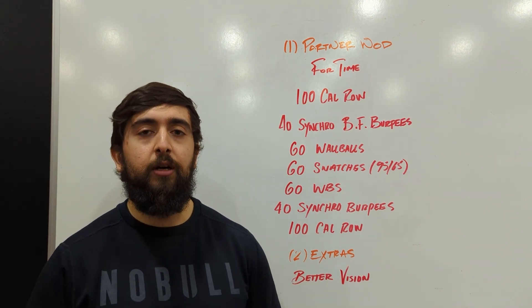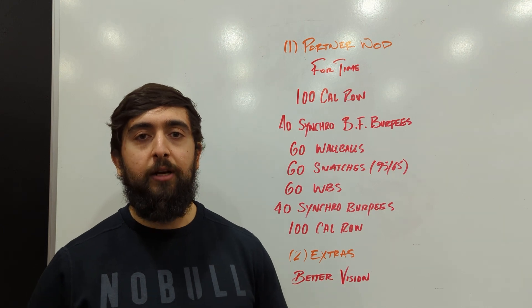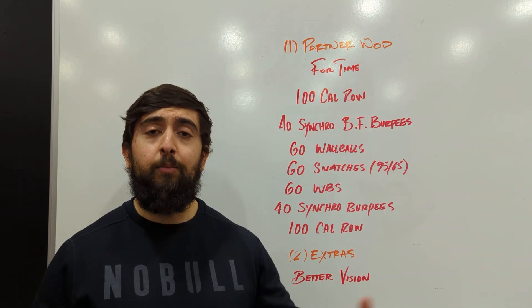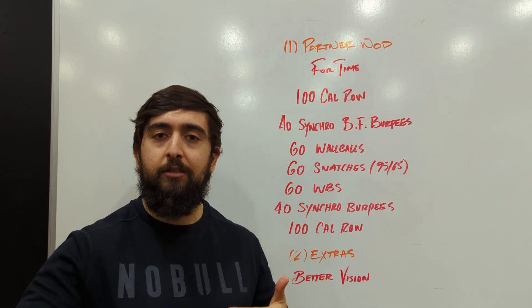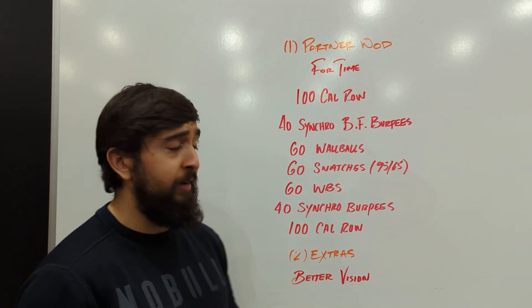So today we're working on that aerobic capacity, trying to be moving consistently throughout this workout. So don't try to sprint this off right off the bat. Instead, try to break it up or move a little slower so you can be consistent across the whole workout without having to take big breaks.